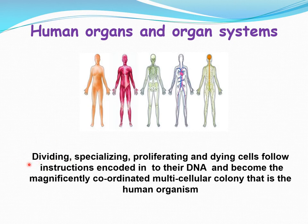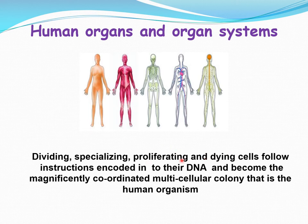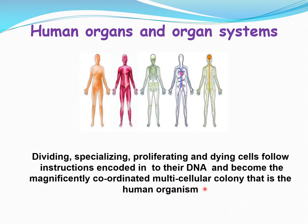One important thing to remember: all cells divide. These dividing, specialized cells also proliferate and die. Suppose there are 100 cells — they divide and become 200, so 100 must die to maintain balance. All cells with the capacity to divide follow instructions encoded in their DNA, becoming part of the magnificently coordinated multicellular colony that is the human organism. The human body is made up of different organs and organ systems, all working together in a very coordinated manner.